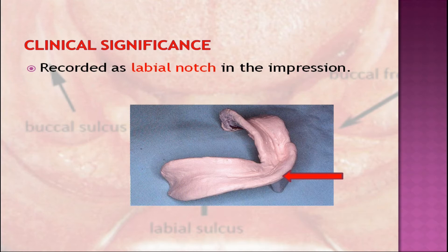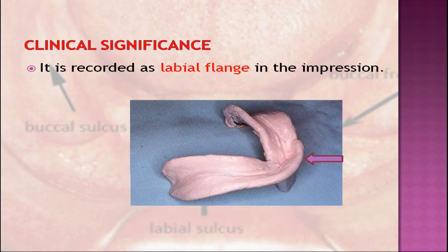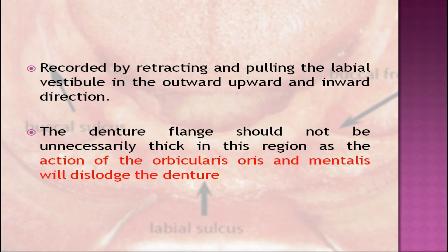The labial vestibule runs from the labial frenum to the buccal frenum. The length and thickness of the labial flange vary with the amount of tissue that has been lost. The labial vestibule in the mandibular region is shallower than the maxillary arch. It is recorded as the labial flange in the impression by retracting and pulling in the outward, upward, and inward direction. The denture flange should not be unnecessarily thick in this region, as the action of orbicularis oris and mentalis will dislodge the denture, so this area should be properly molded during impression making.